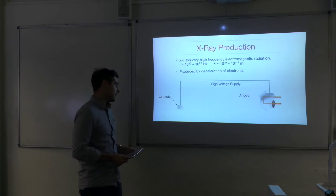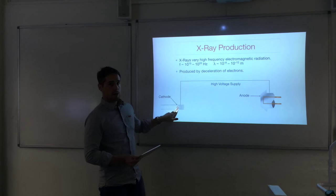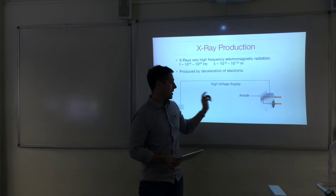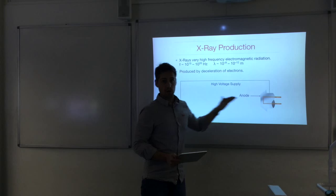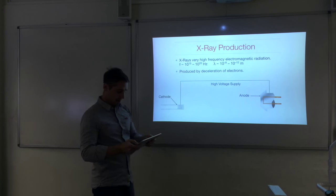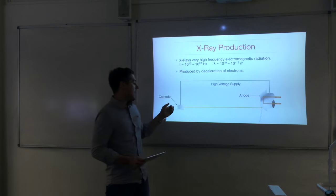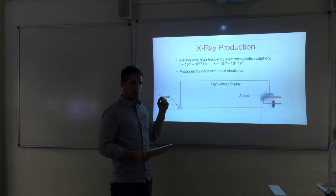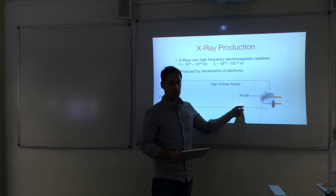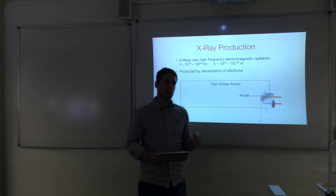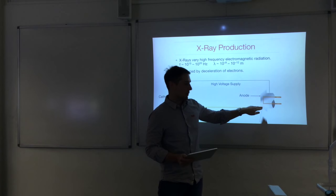In an x-ray tube there are three primary components: the cathode, the high voltage supply across cathode and anode, and the anode — sometimes called the target — because we'll be firing electrons at it. Electrons are produced at the cathode by a process called thermionic emission. This all takes place in a vacuum so that the electrons are not obstructed going from the cathode to the anode, where they are accelerated to a very high speed and crash into the target metal, usually tungsten, experiencing a large deceleration.